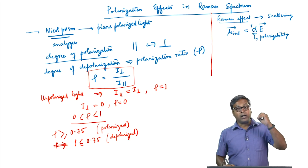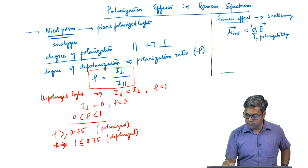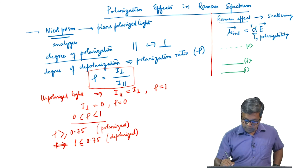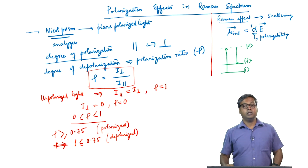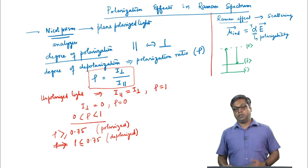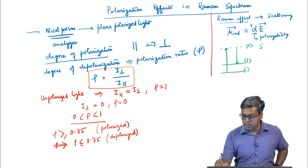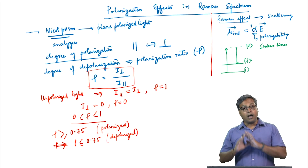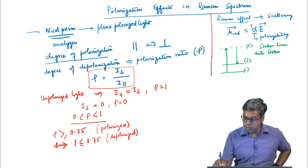We discussed that the virtual state is involved in the Raman process. To draw the Raman process, we have the initial state and the final state, but we also need a virtual or intermediate state. From the initial state it goes to the virtual state, and from the virtual state it comes back. If the frequency of the scattered light is less than that of the incident light, we get Stokes lines; if the frequency is greater than the incident light, we get anti-Stokes lines.